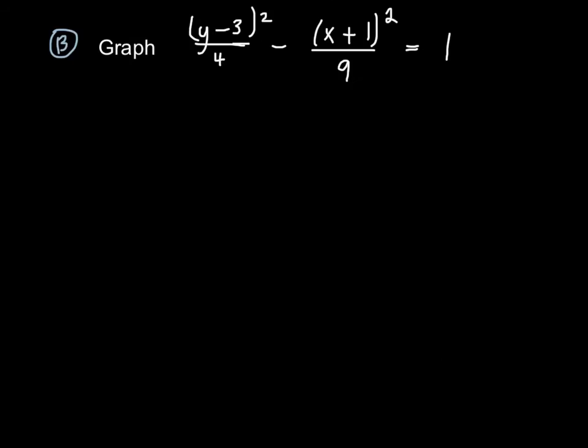Next, we're told to graph y minus 3 squared over 4 minus x plus 1 squared over 9. It's going to be useful to identify what type of conic section this is. Based on the fact that there is a negative sign in this equation, we know that this is a hyperbola.